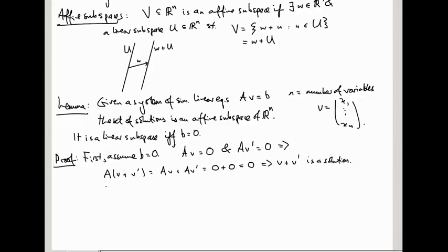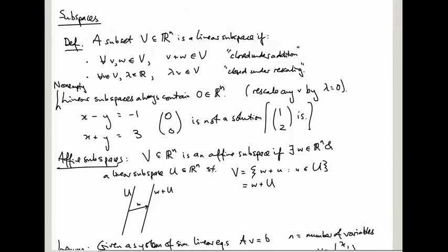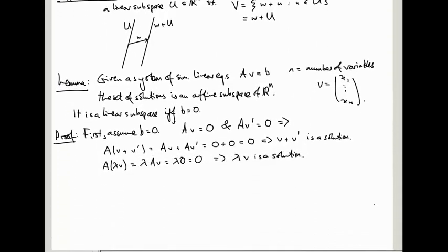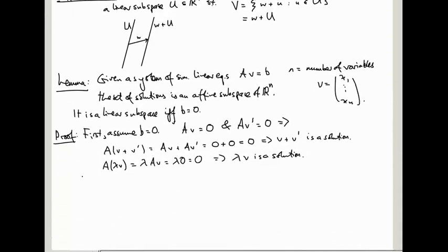Similarly, if V is a solution and lambda is a number, then A(lambda V) is lambda AV, which is lambda times 0, which is 0, and that tells us that lambda V is a solution. So the set of solutions satisfies these two conditions from the definition of a subspace. Notice also it's a non-empty subspace, because V equals 0 is always a solution to the equation AV equals 0. So if B is 0, then the set of solutions is a linear subspace.